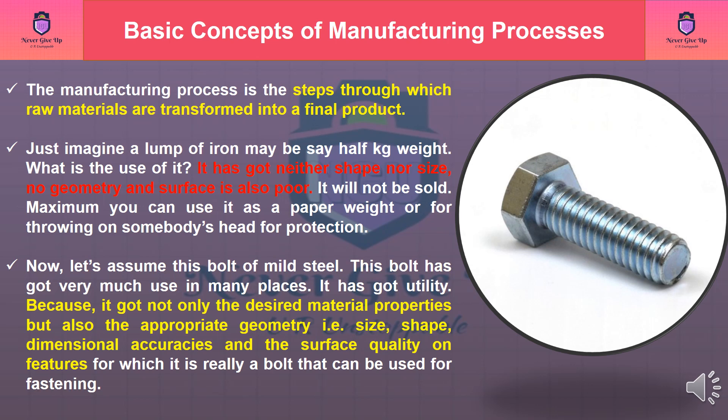Now, let's assume this bolt of mild steel. This bolt has got very much use in many places — it has got utility. Because it got not only the desired material properties but also the appropriate geometry, that is size, shape, dimensional accuracies, and the surface quality on features for which it is really a bolt that can be used for fastening.